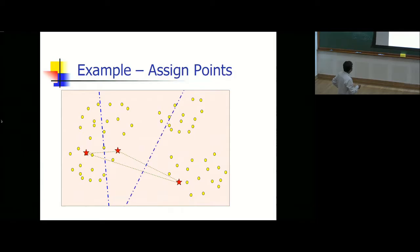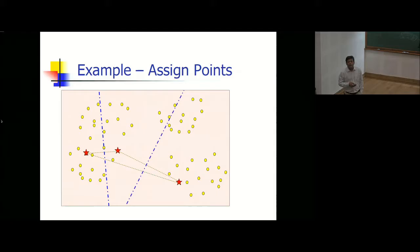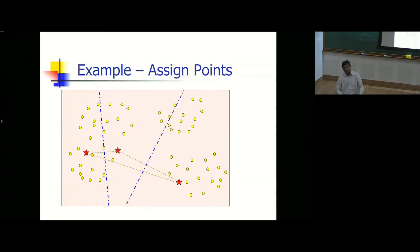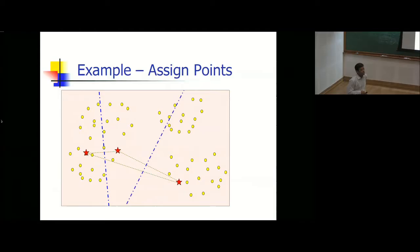Initially three centers are picked from the data. For a test point, compute D1, D2, D3 (distances to the three centers). Assign the point to the group with minimum distance. The algorithm is easy: pick centers randomly, assign, recompute, repeat until convergence.